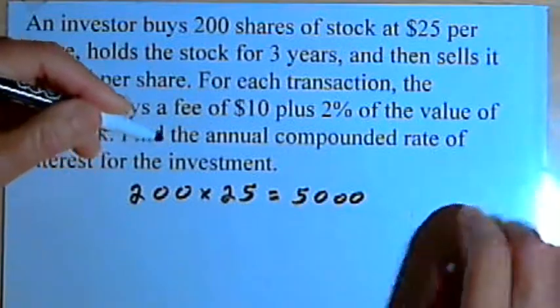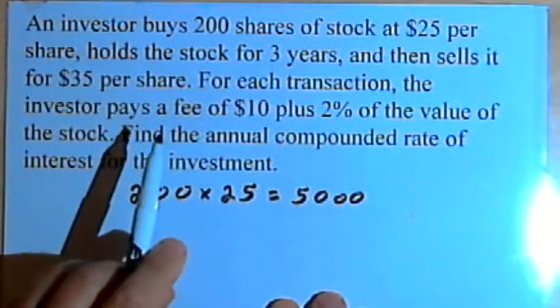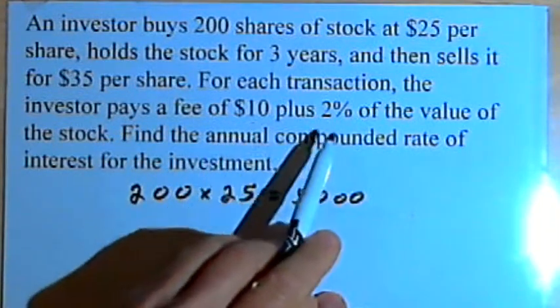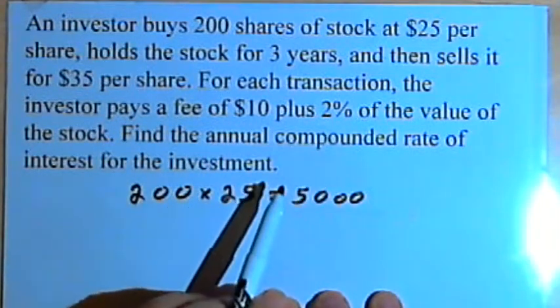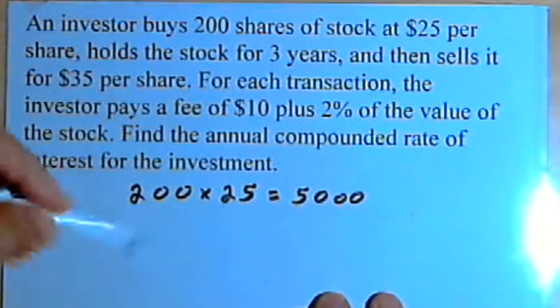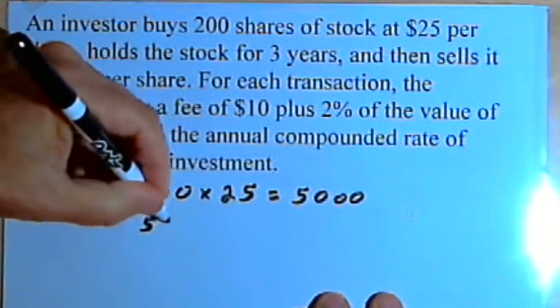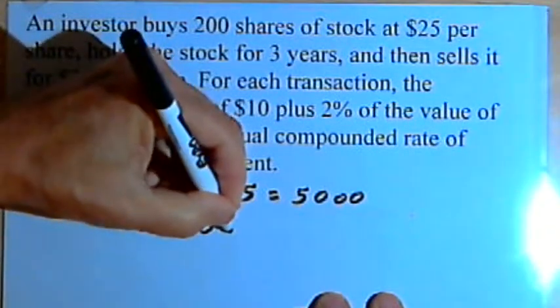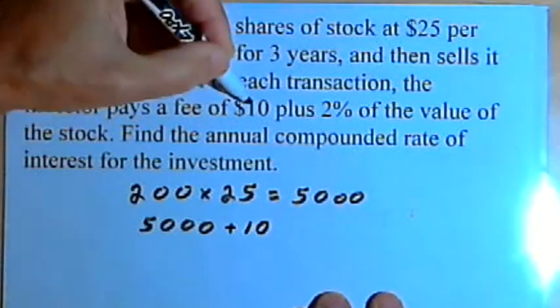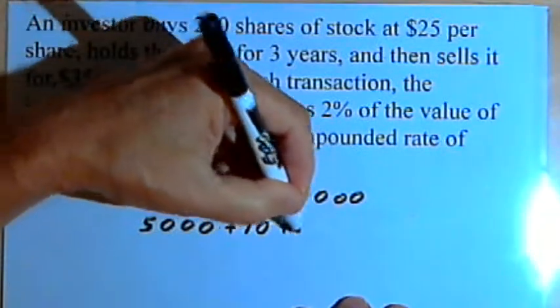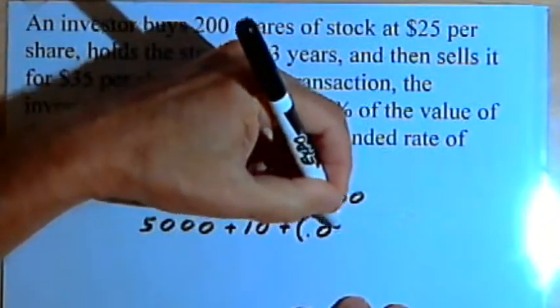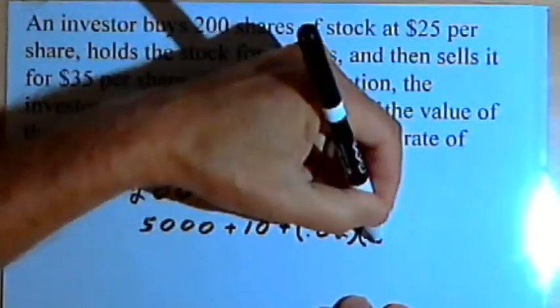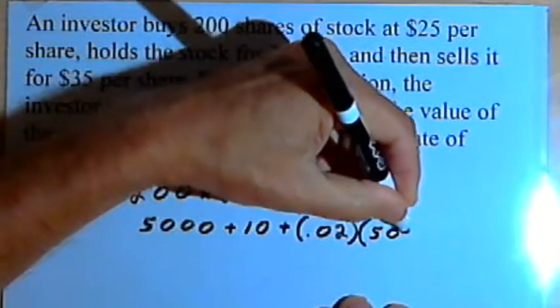But actually, that isn't the total he paid. He also had to pay a fee. The fee was $10 plus 2% of the value of the stock, and the value of the stock was $5,000. So actually, he ended up paying $5,000 for the stock, plus $10 more for the fee, plus 2% or 0.02 times the value of the stock, which was $5,000.